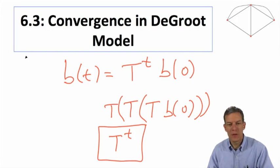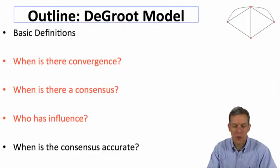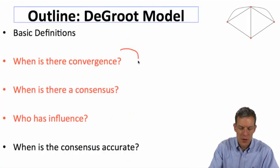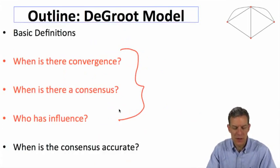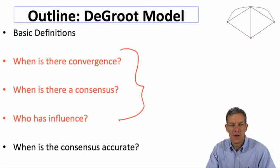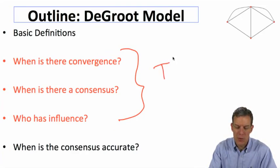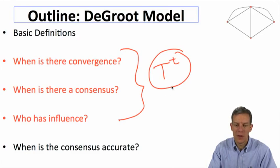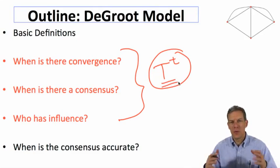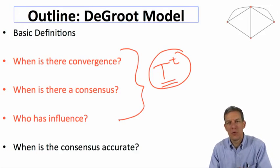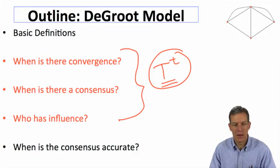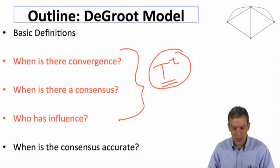The beliefs take a very simple form, and we can now ask questions about when there is convergence, when there is consensus, and who has influence. These questions are going to depend on the properties of the matrix T — specifically what this matrix ends up looking like when we raise it to higher and higher powers and who ends up with a lot of weight in that system.